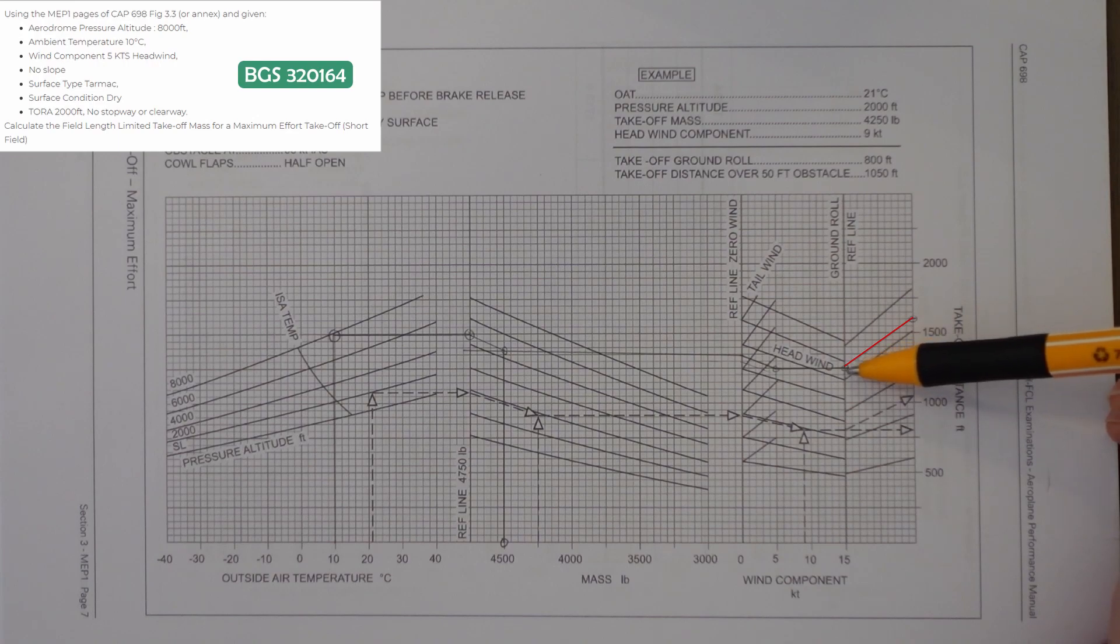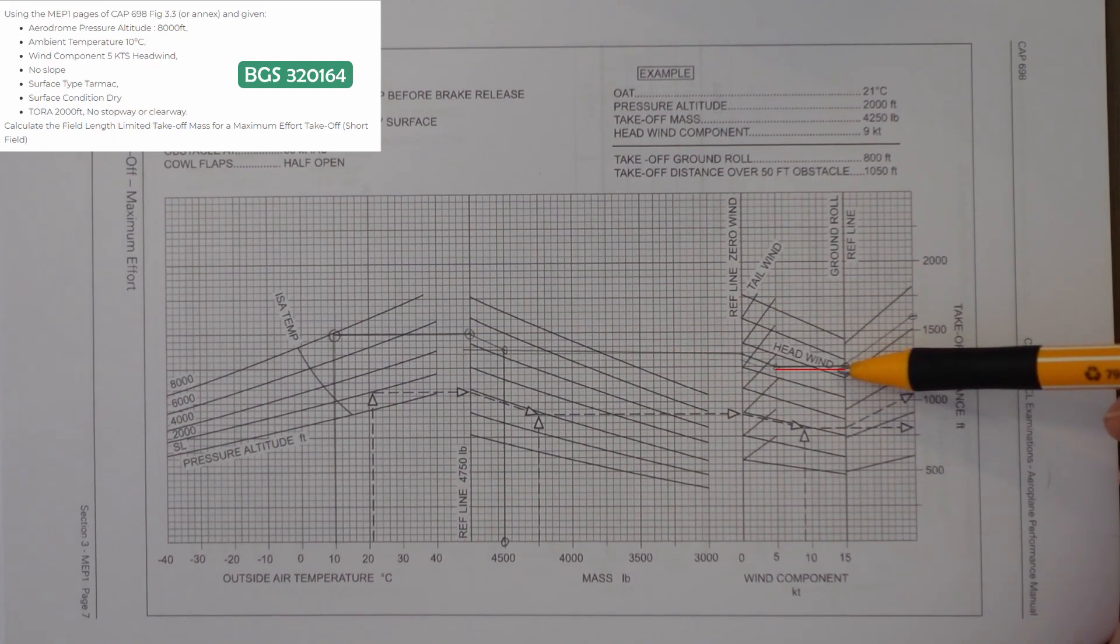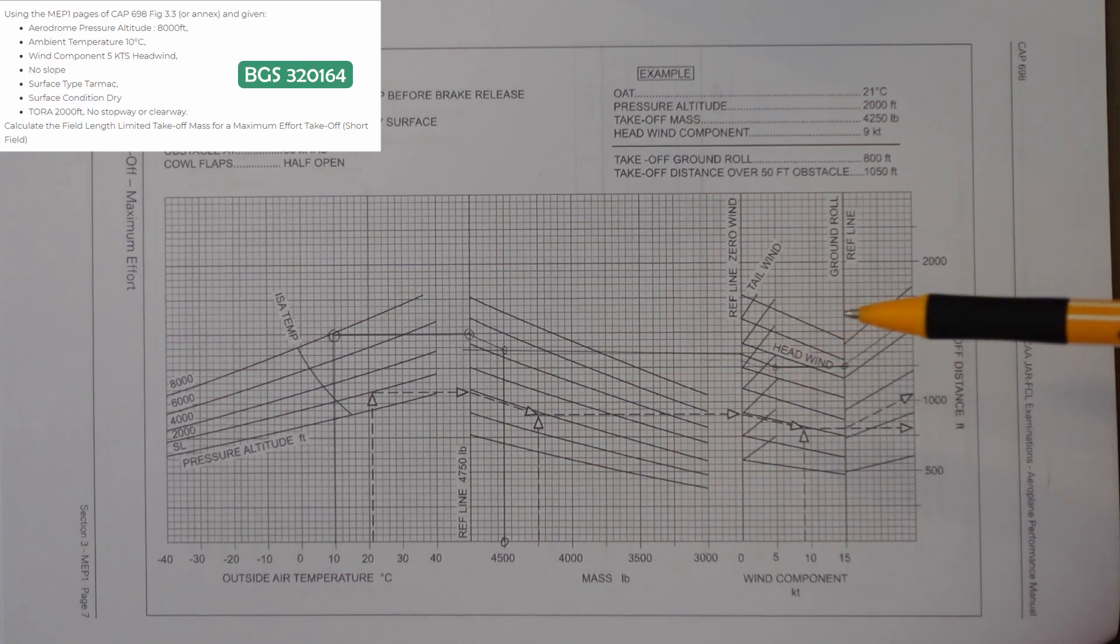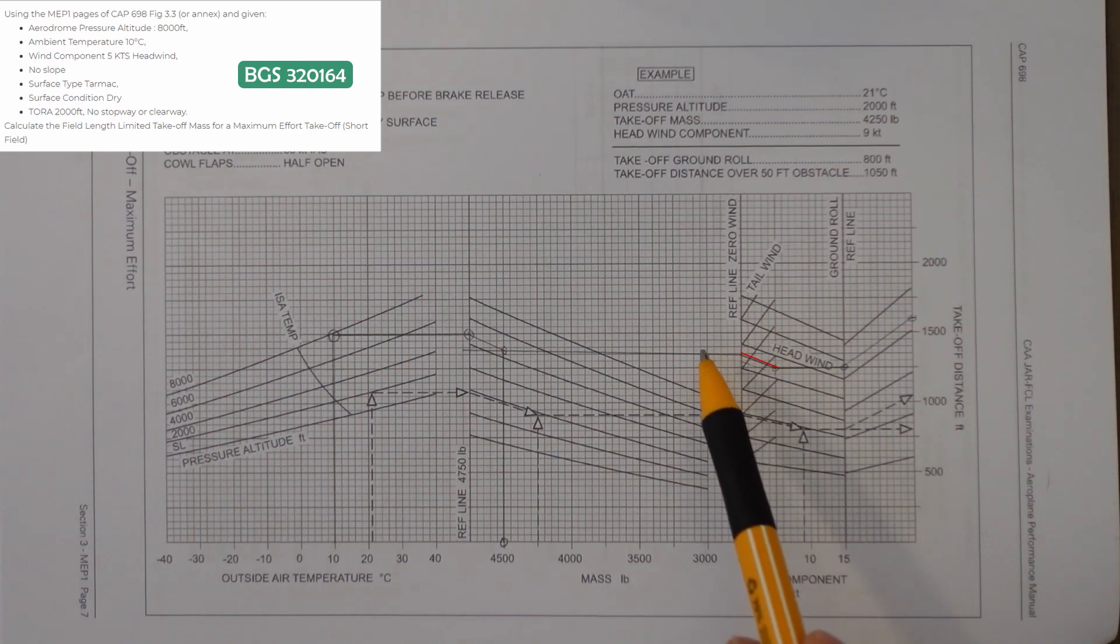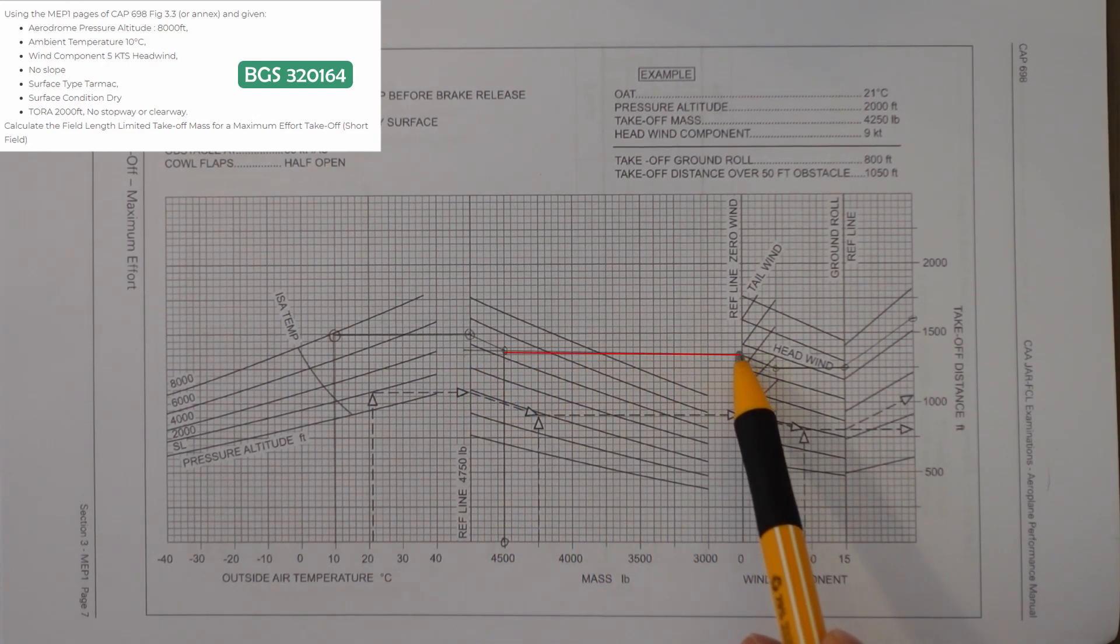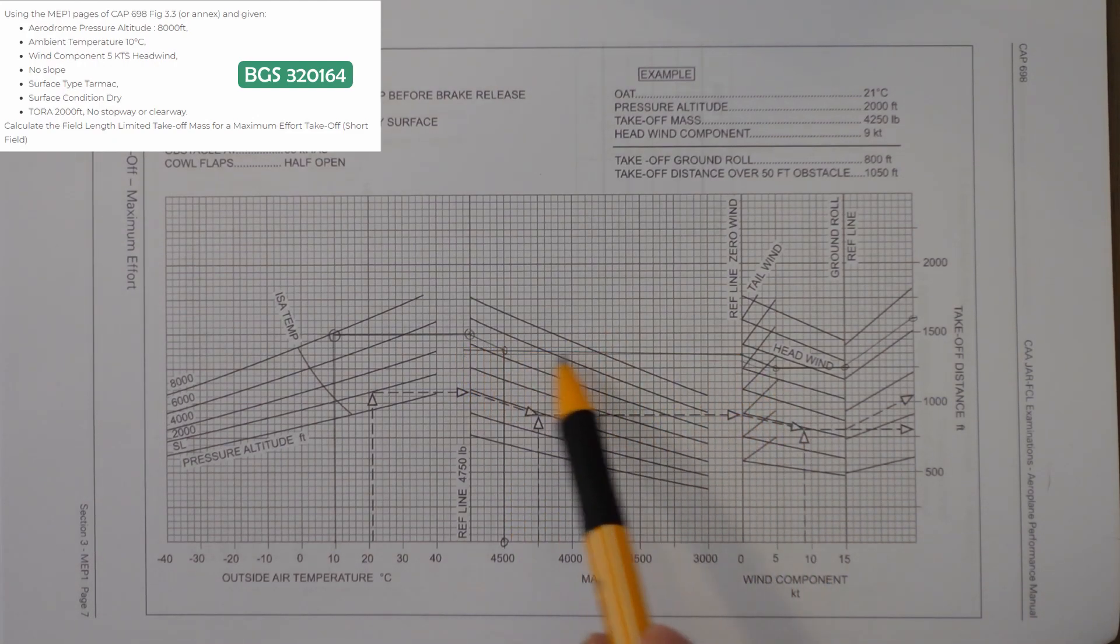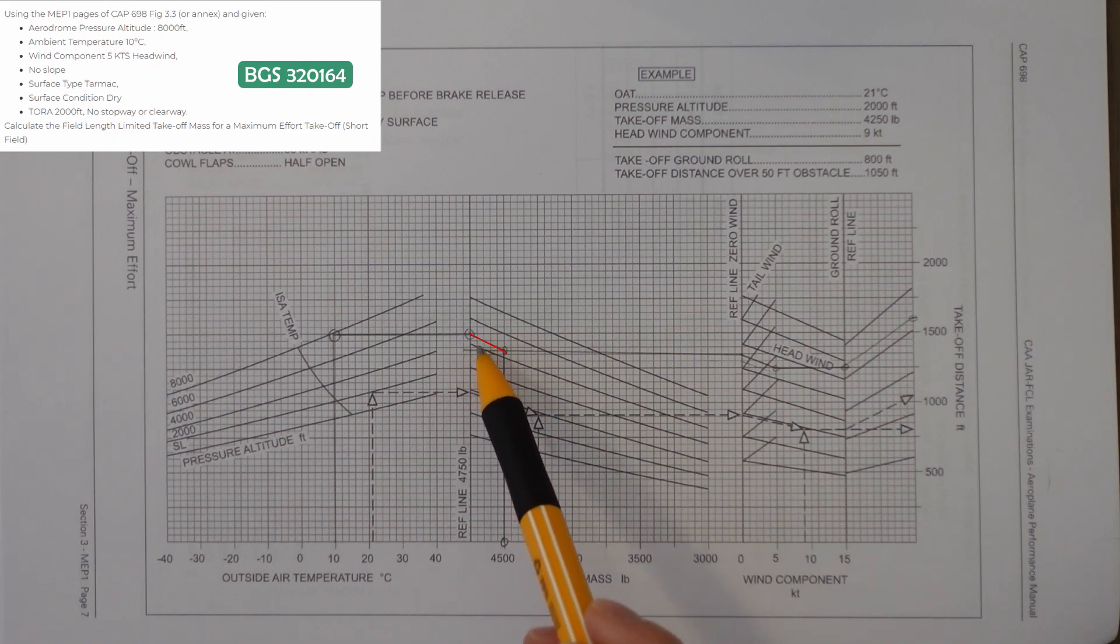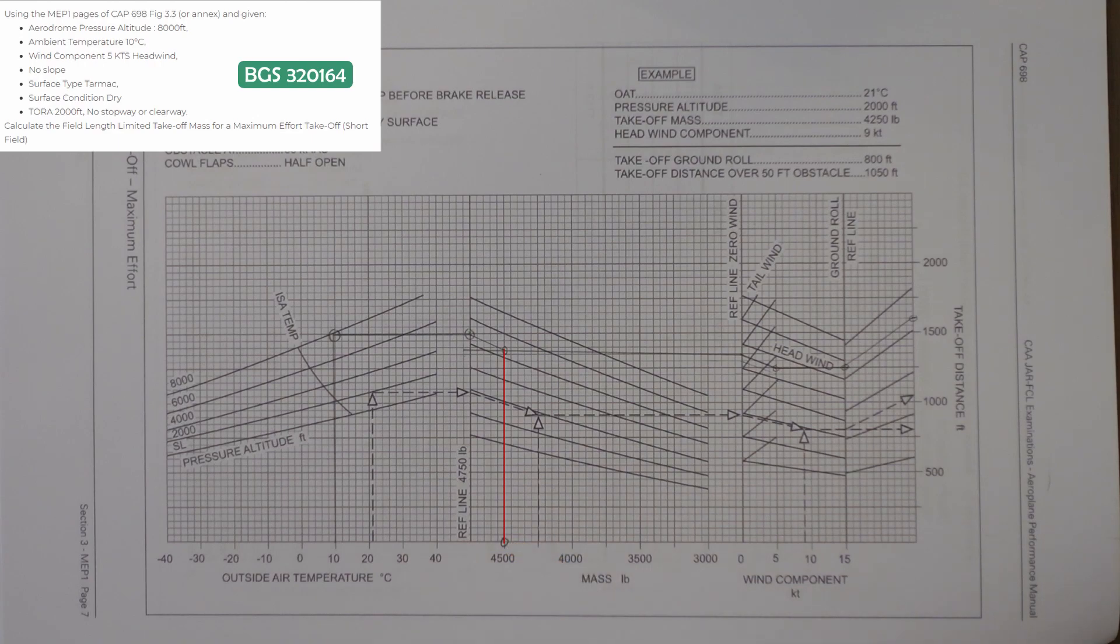Follow the guideline down to the reference line and then we go straight across. Just as the example question did, it goes down and then straight across to our wind, which was 5-knot headwind. From the 5-knot headwind, I go up slightly until this next reference line. At that reference line, I make a line straight across. Then we follow the guidelines in between this reference line and the line we've just drawn across to find a meeting point. And then at that meeting point we go straight down to find a mass of about 4,500 pounds.